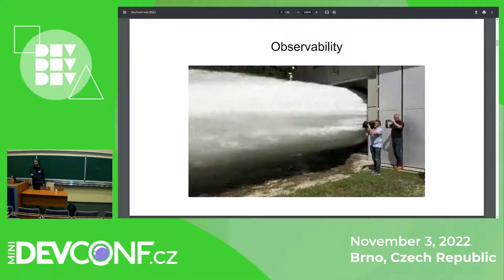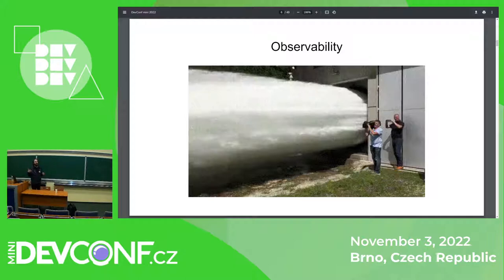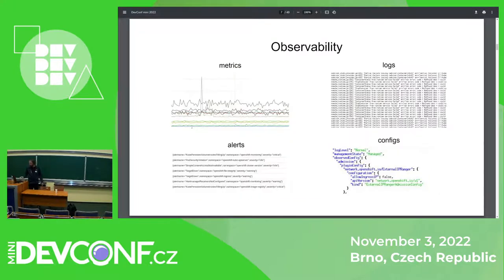One thing that can help us is observability. Observability is basically the quality of a product or software that produces enough outputs that one can infer the internal state of the software by observing those outputs. It means you don't need to recompile or reconfigure the software to understand what's going on — the software needs to produce this data on a regular basis.